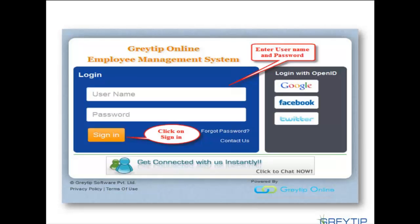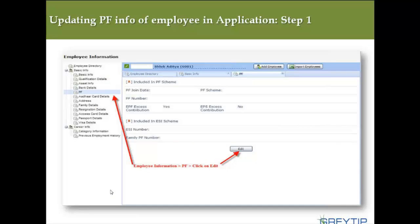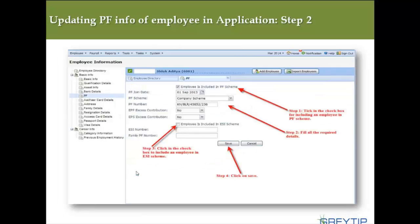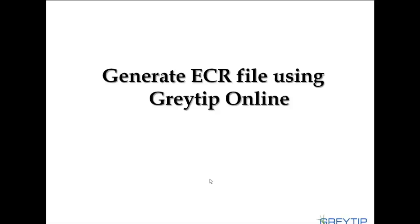Here is where the Gratip online application comes in as a solution. The login process is the same — enter your username and password and click Sign In. Step 1: update the PF info of all employees in the application. Under Employee in the left-hand menu, click on Employee Information, then go to PF. Click Edit to update each employee's PF information: check that the employee is included in the PF scheme, set the date of joining, select the scheme type, and enter the PF number. Once all details are added, click Save. That's all you need to do — no need to work in spreadsheets or change file formats.